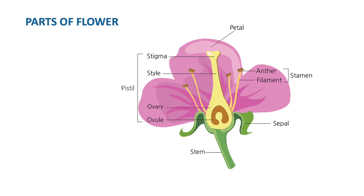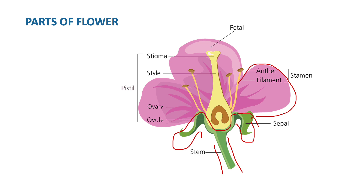Children, I hope you remember that we have done parts of the flower when you used to come to school. We have done each and every part in detail. If you can see here, the down green part is the stem, and just above that is the green small leaf-like structure called the sepal. The brightly colored parts in different colors are called the petals. Deep inside the flower, there are two main parts called the stamen and pistil.